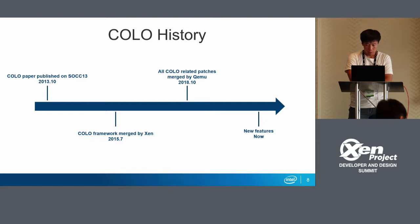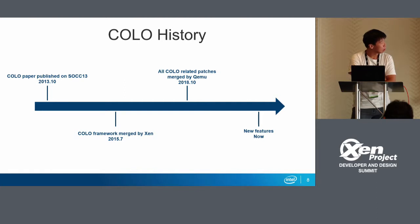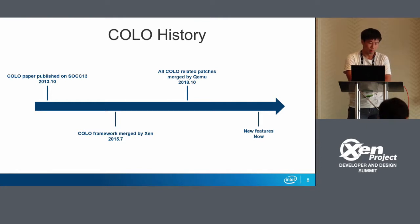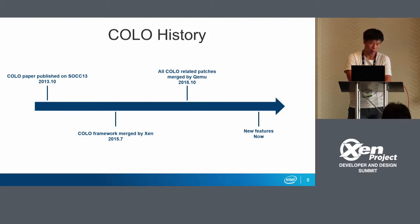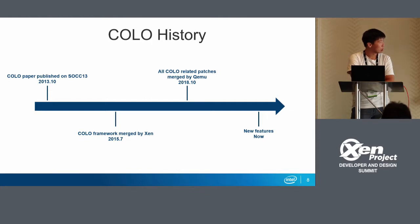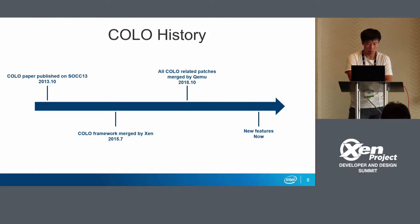In 2018, COLO-related patches were merged by QEMU. At that time, in our original design, COLO's network-related work was running in kernel space like Domain Zero. But we had concerns, and we communicated with the kernel community. Finally, we dropped that design and redeveloped the COLO network work in QEMU user space. That's user space — it has many advantages, which I will talk about next.